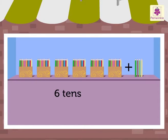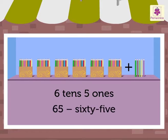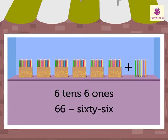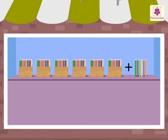Six tens and five ones is sixty-five. Six tens and six ones is sixty-six. Six tens and seven ones is sixty-seven.